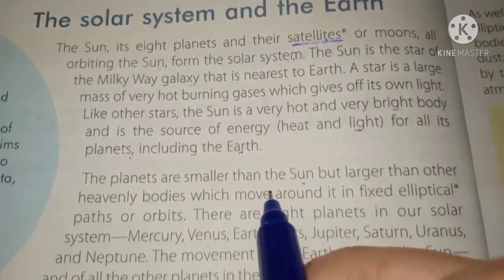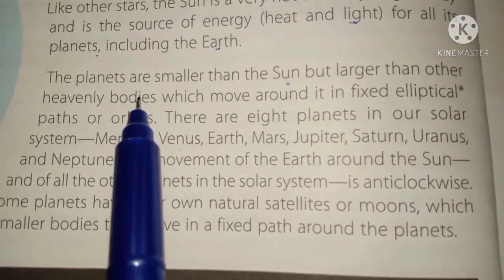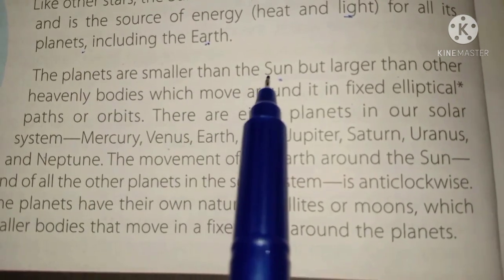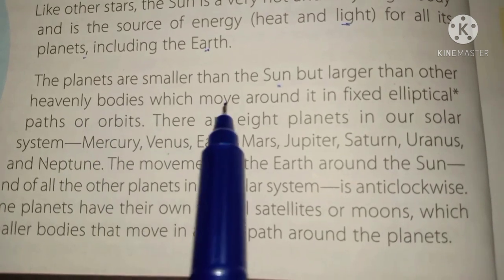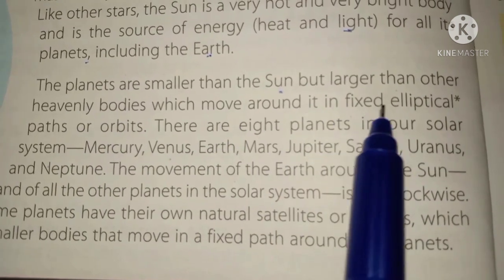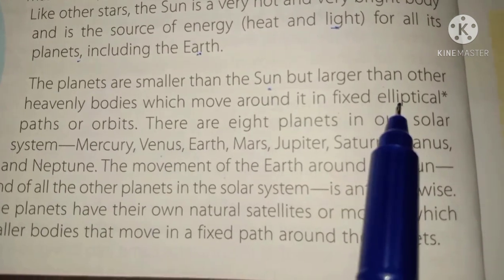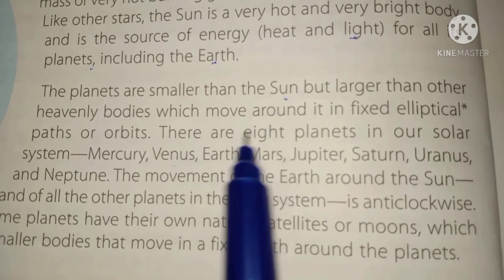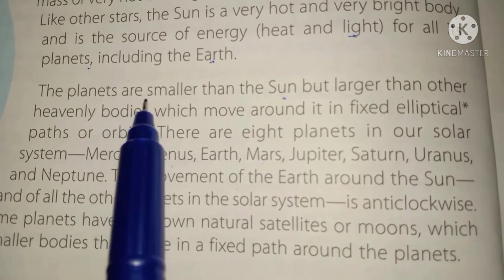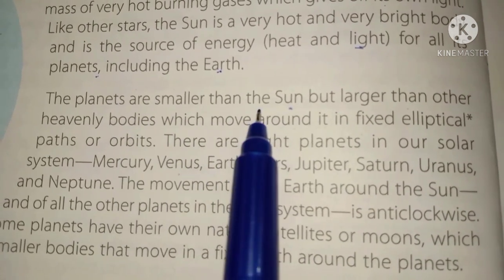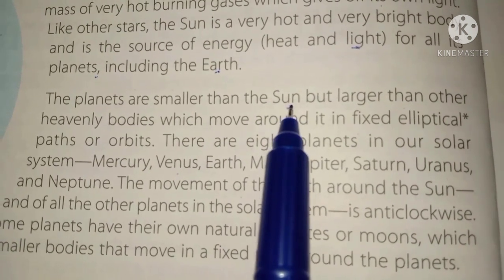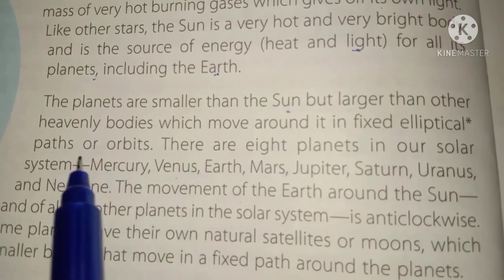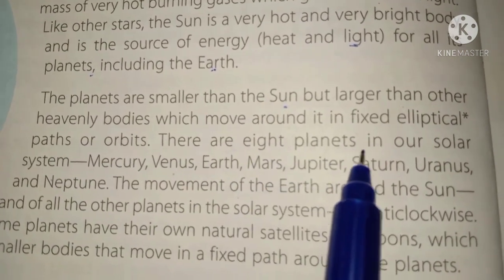The planets are smaller than the sun but larger than other heavenly bodies, which move around it in fixed elliptical paths or orbits. Elliptical paths are fixed paths in which different heavenly bodies move. Our planets are basically smaller than the sun but move around it in these fixed elliptical orbits.